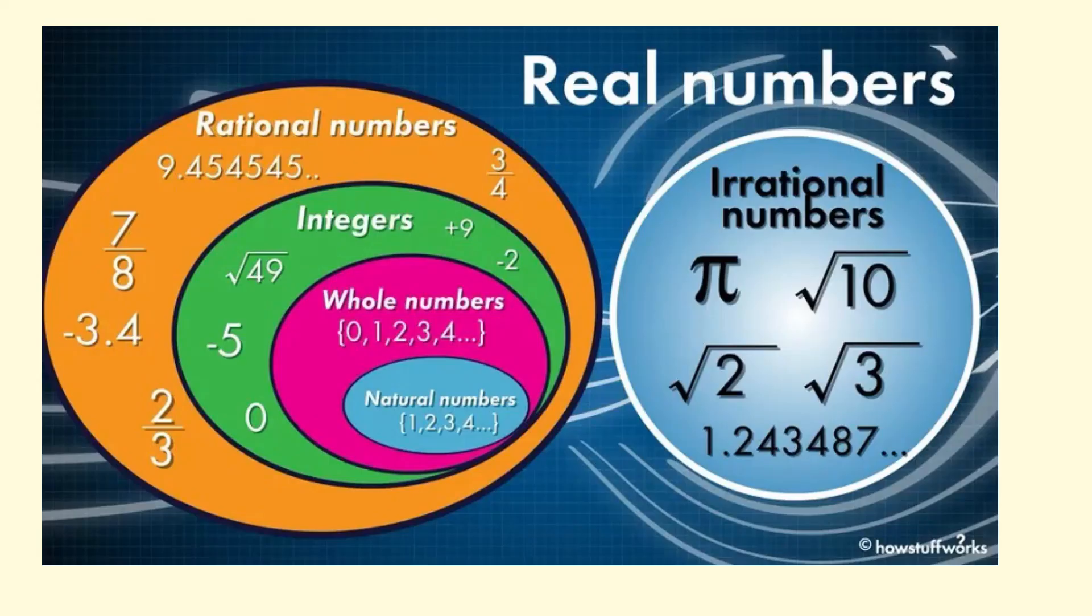And when we combine all these two kind of numbers rational and irrational we call them as the real numbers. So real number family is a bigger family which includes both rational numbers and irrational numbers. And examples are given here.